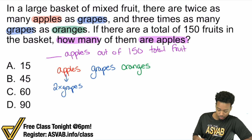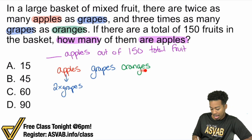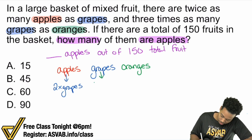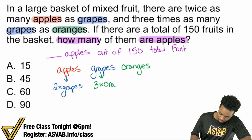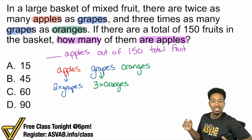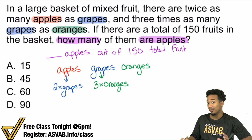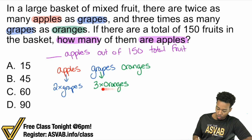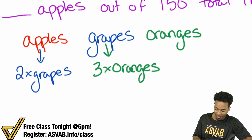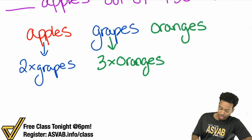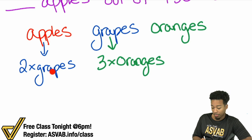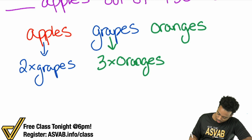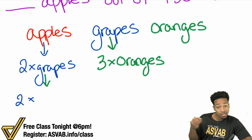Next: three times as many grapes as oranges. So whatever grapes is, it's three times the number of oranges. Notice that we can represent grapes in terms of oranges. For every grape, that's three times the amount of oranges. So we can replace the grapes with three times the amount of oranges. I'm going to keep the two there — it's two times the number of grapes, and the number of grapes is three times the number of oranges.